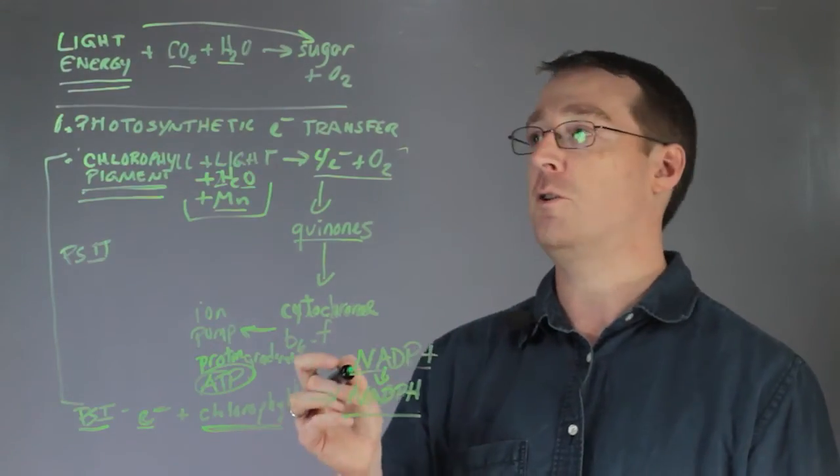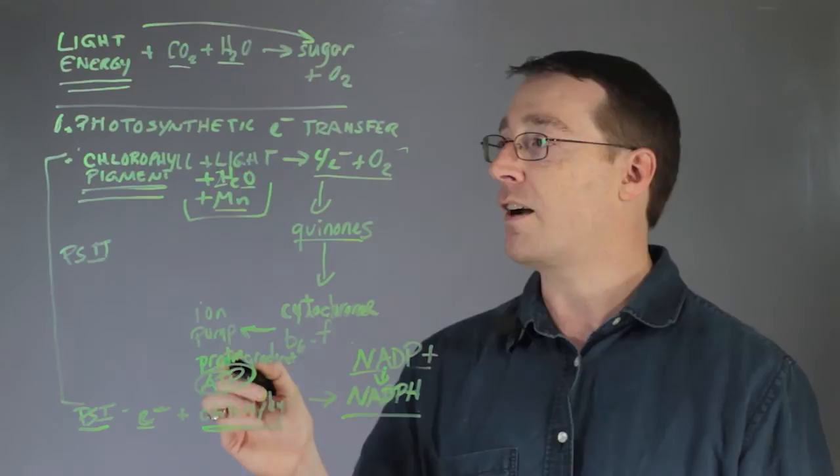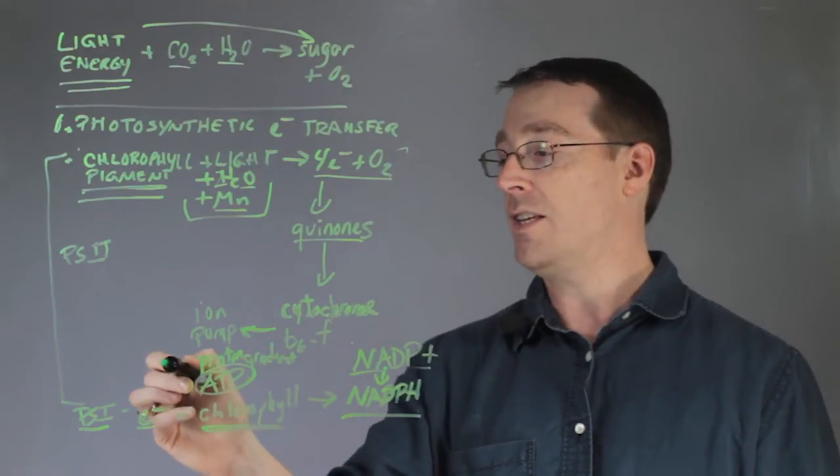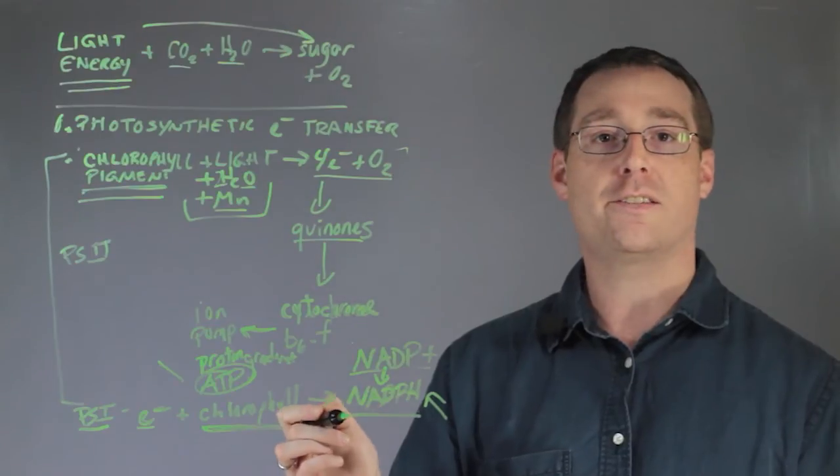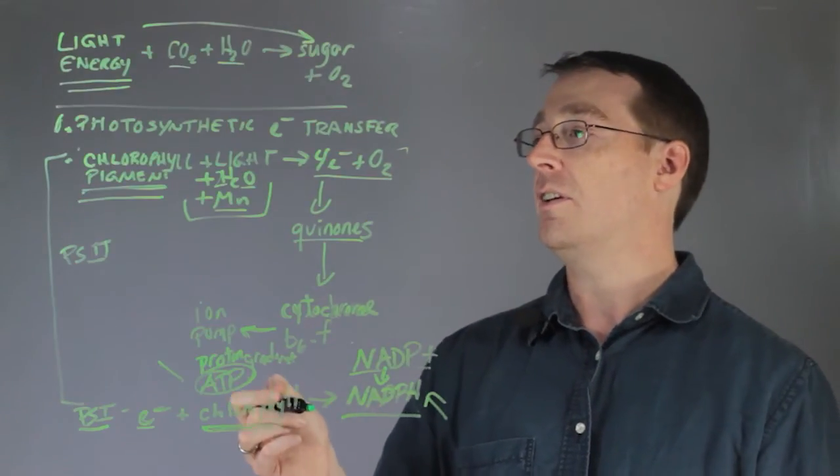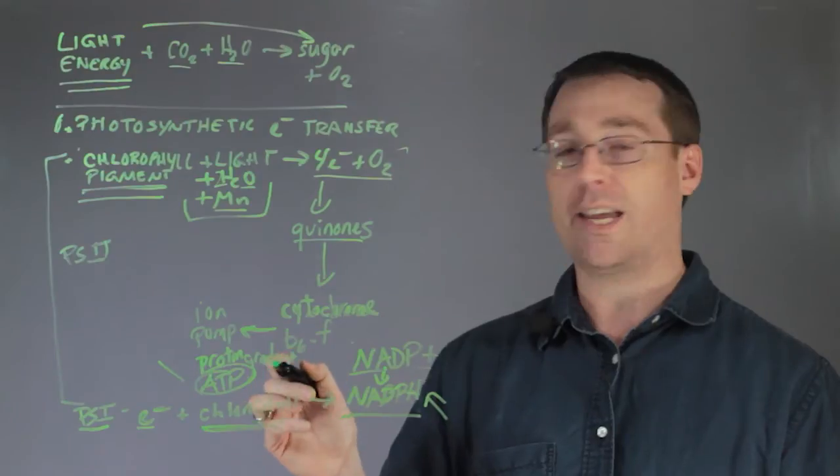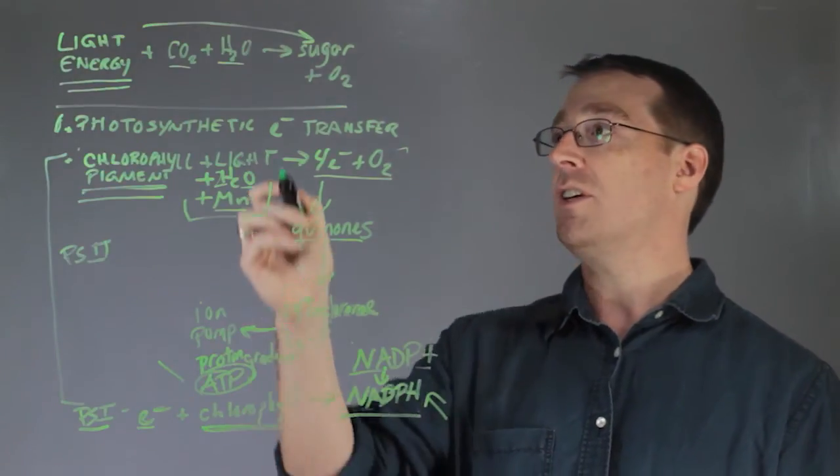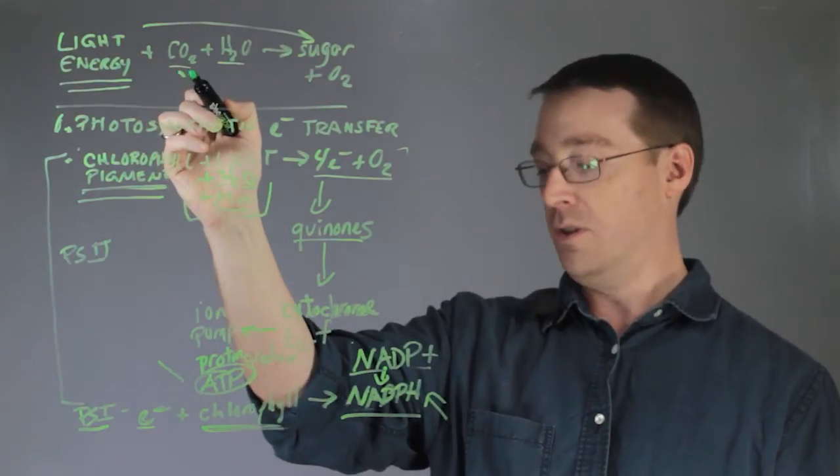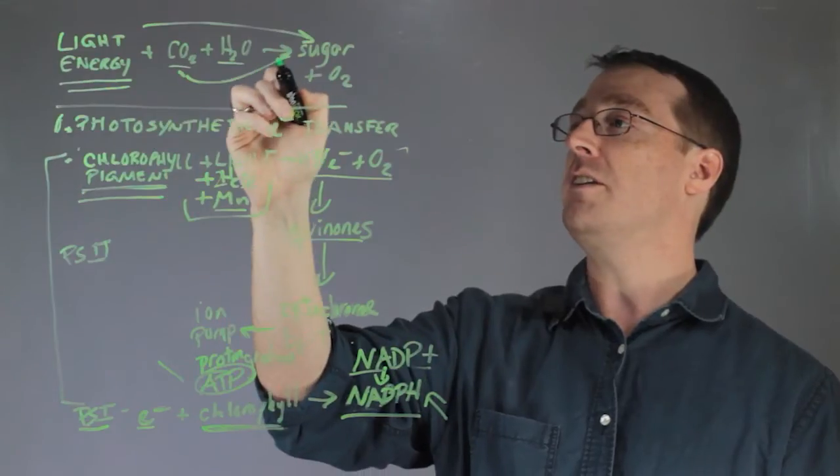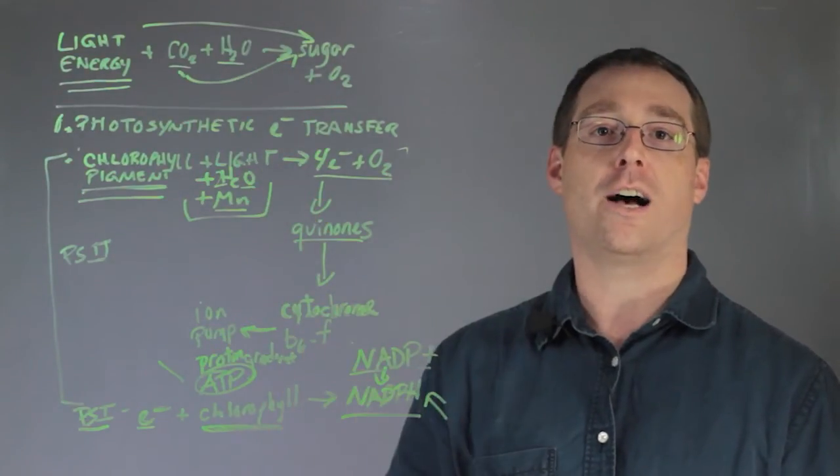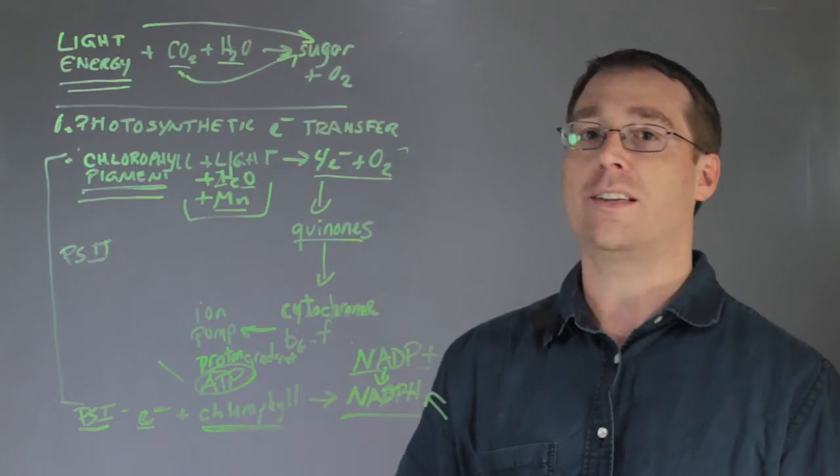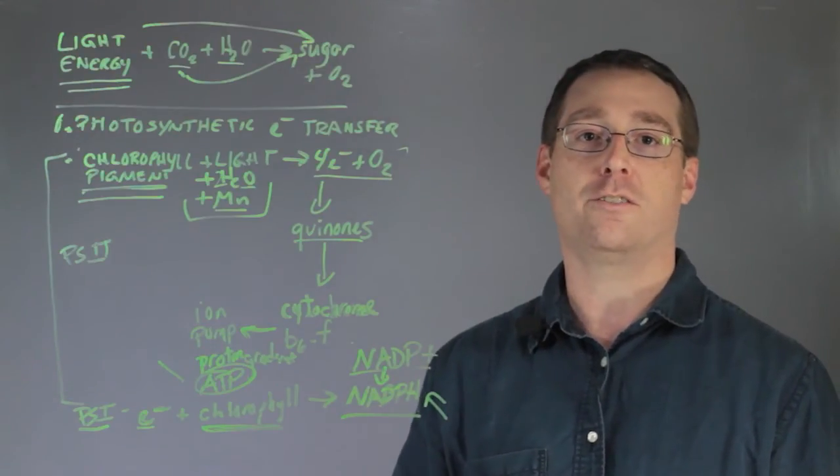In step 2 of photosynthesis is carbon fixation in which the ATP and the NADPH that are generated in step 1 are required for the Calvin cycle. In this cycle, CO2 is converted into sugar and ultimately forms glyceraldehyde 3-phosphate, which is the essential starting material for glycolysis.